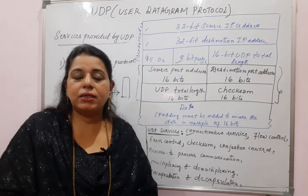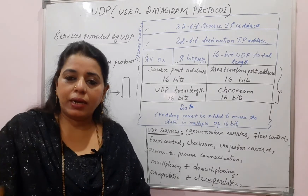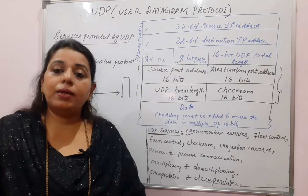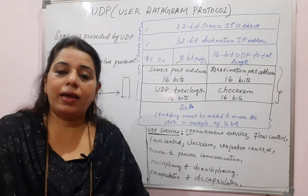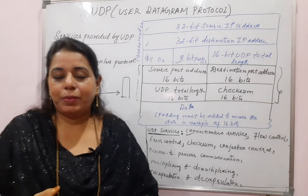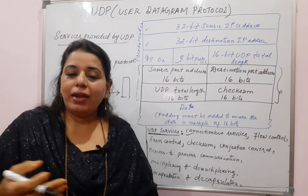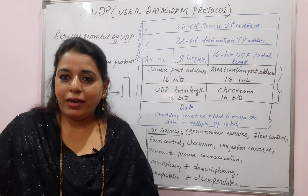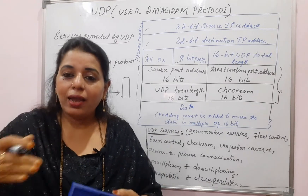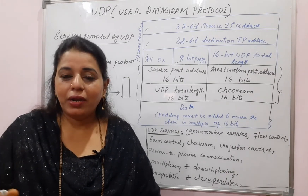In connection-oriented protocols, first a connection is established. It is simply like if I want to communicate with anyone, first I will try to find out whether the other person is ready to receive my message. I will try to establish the connection by saying hi, hello, how are you. Then I will tell the exact message. After I end my conversation, I will never end abruptly — we say bye-bye, take care, good night. So hi and hello becomes connection establishment, and bye-bye and take care becomes connection termination.